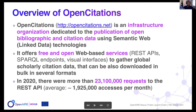All the services we offer are free and open. We have made available different ways to access the citation data: REST APIs, SPARQL endpoints, and visual interfaces. All the data we publish is totally available online and can be downloaded in bulk. We provide approximately every two months new releases of the data hosted in Open Citations. In 2020 we got more than 23 million requests to our REST API, which is currently the most used service for accessing our data.